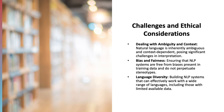Another critical challenge in NLP is ensuring that systems are free from biases and do not perpetuate stereotypes. Bias in NLP can arise from training data that reflects societal biases or stereotypes, leading to NLP systems that are unfair or discriminatory, particularly in tasks like text classification, sentiment analysis, and language generation. Addressing this issue involves careful curation of training data sets, the development of algorithms that can identify and mitigate bias, and ongoing evaluation to ensure that NLP systems treat all users and demographic groups fairly.